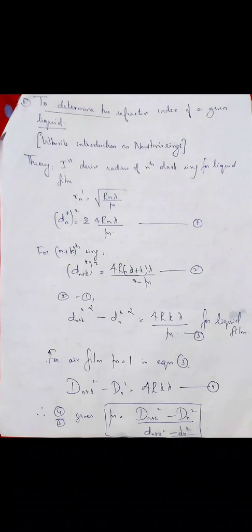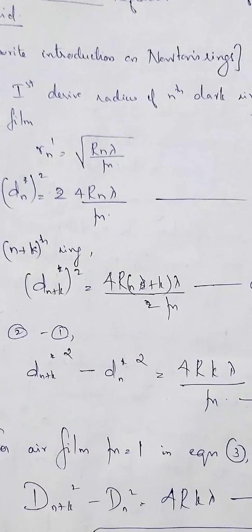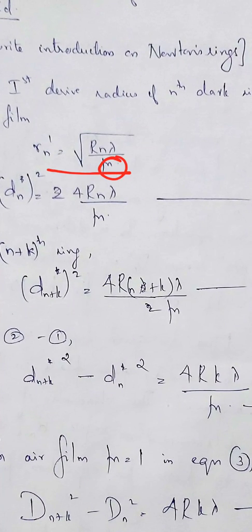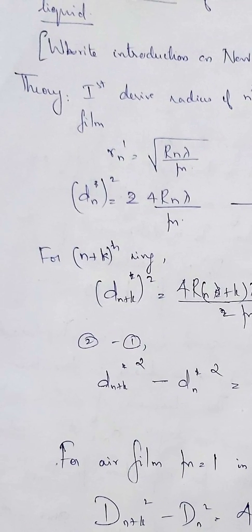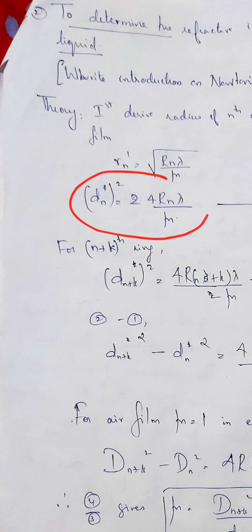In the theory section, we write down the radius and diameter of the nth dark ring for a liquid film. Since the film is liquid, we cannot put mu equal to 1. The diameter squared of the nth dark ring for a liquid film is: D_n² = 4Rnλ/μ. For a liquid film there is the additional division by mu, compared to an air film where D_n² = 4Rnλ.